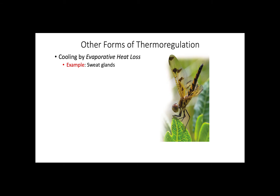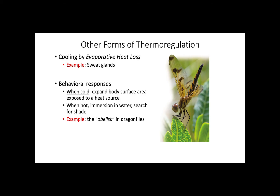Let's now discuss other forms of thermoregulation. First, cooling by evaporative loss — this is what we often know as sweating, where sweat glands get activated to increase evaporation and reduce body temperature. Some animals also behave in specific ways to increase or reduce their temperature. In cold environments, some animals expand their body surface area of parts exposed to a heat source, increasing heat gain. Conversely, some animals, like dragonflies, reduce their body surface area by adopting specific positions to reduce heat gain.